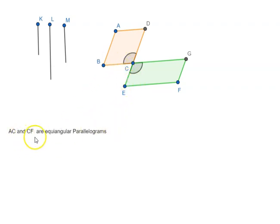So which means AC and CF are equi-angular parallelograms and we know that we have placed them on a straight line BC and CG, which means DC and CE would also be on a straight line.